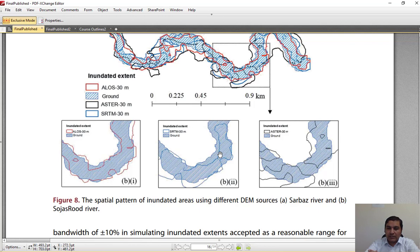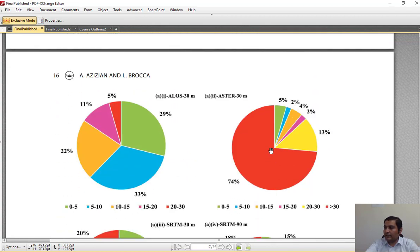ALOS performs relatively better than other data sources, and other data sources do not simulate continuous and logical flood extent. These are some statistical parameters.